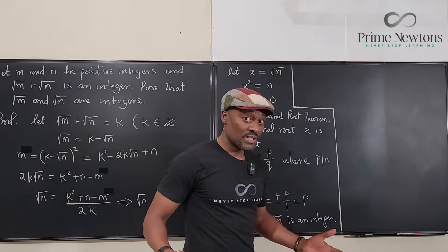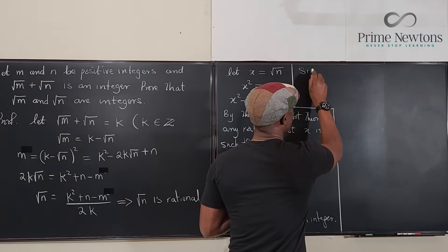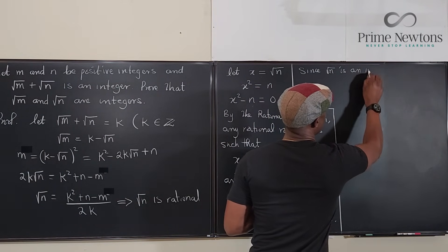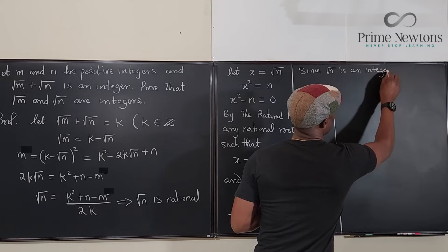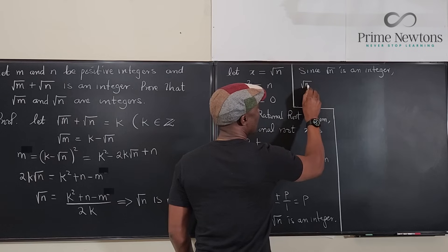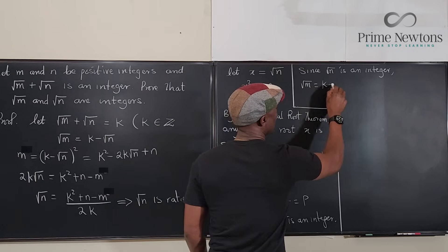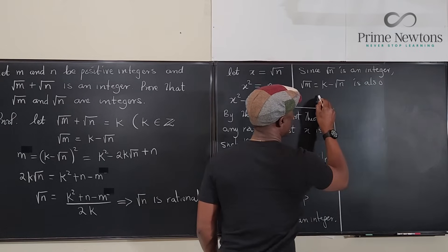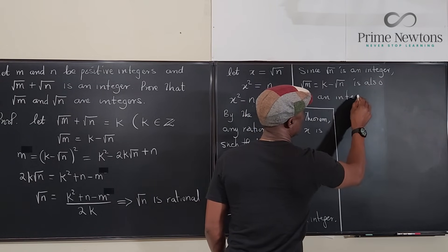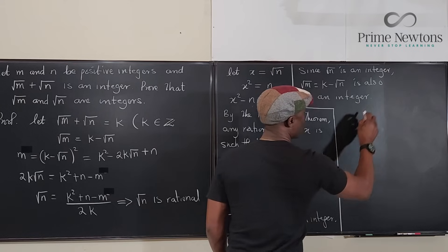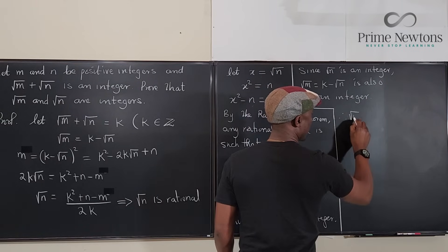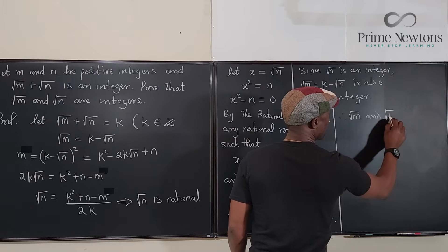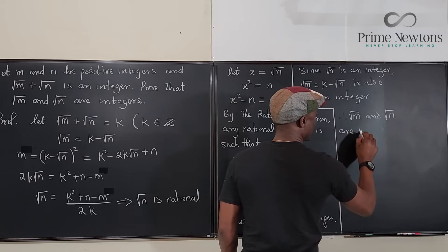So we're going to say since √n is an integer, √m = k - √n is also an integer. Therefore, √m and √n are integers.